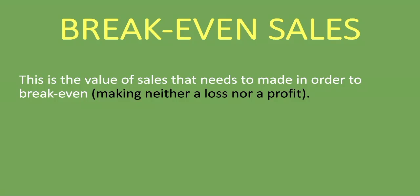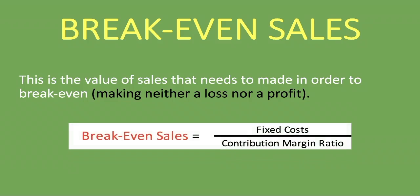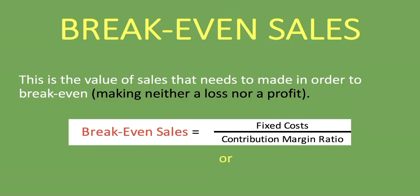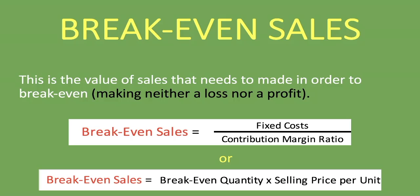What is the formula for calculating break-even sales? Here it is: Break-even sales equals fixed costs divided by the contribution margin ratio. You'll usually be given your fixed costs, and you may have to calculate the contribution margin ratio. Another way to calculate break-even sales is to take your break-even quantity and multiply it by the selling price per unit. Either formula will give you the exact same answer.